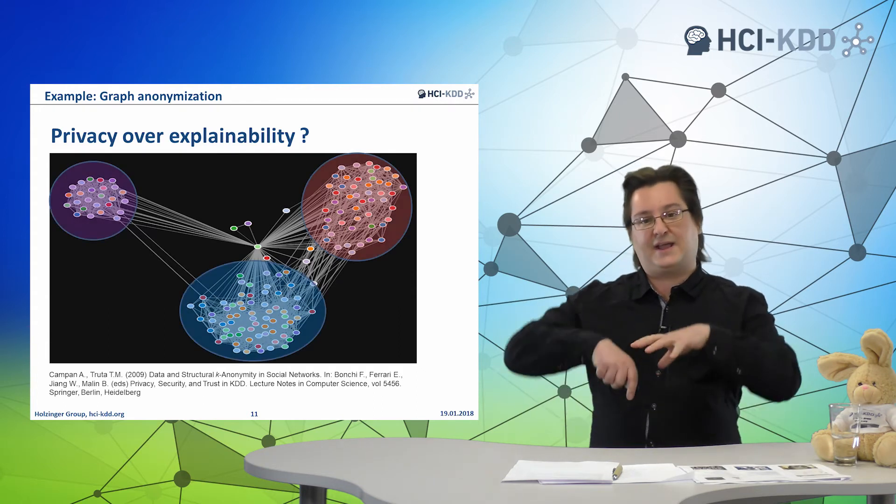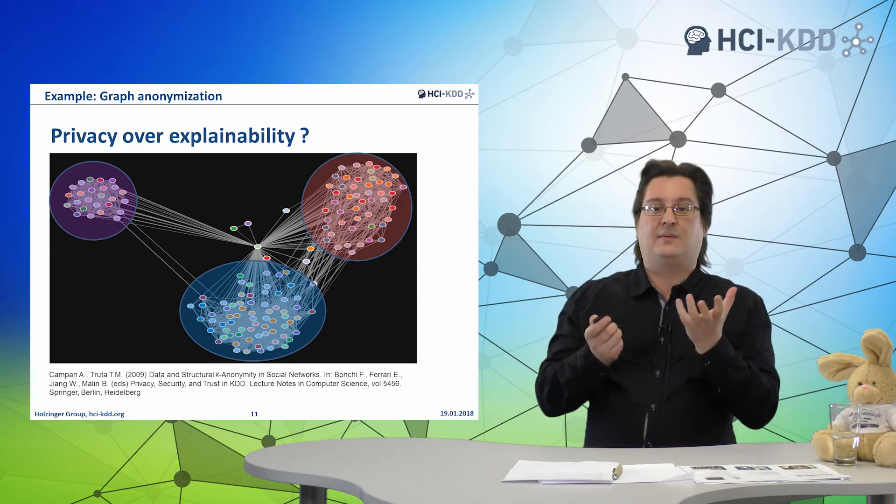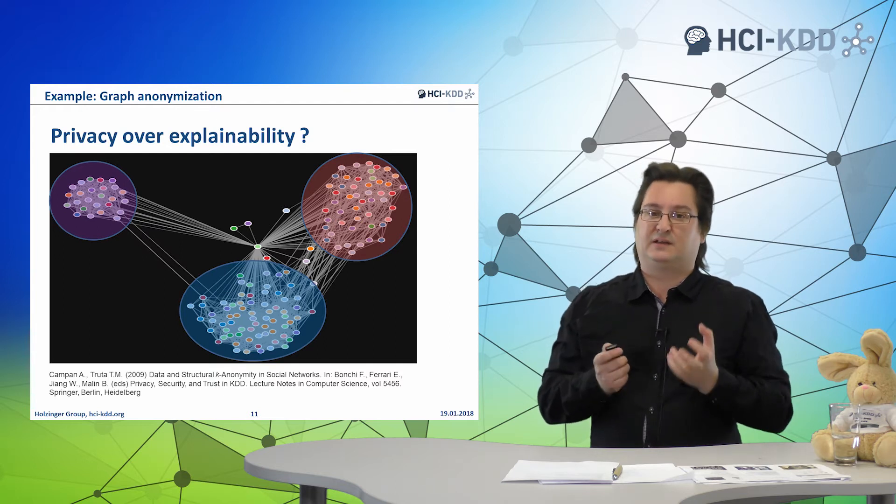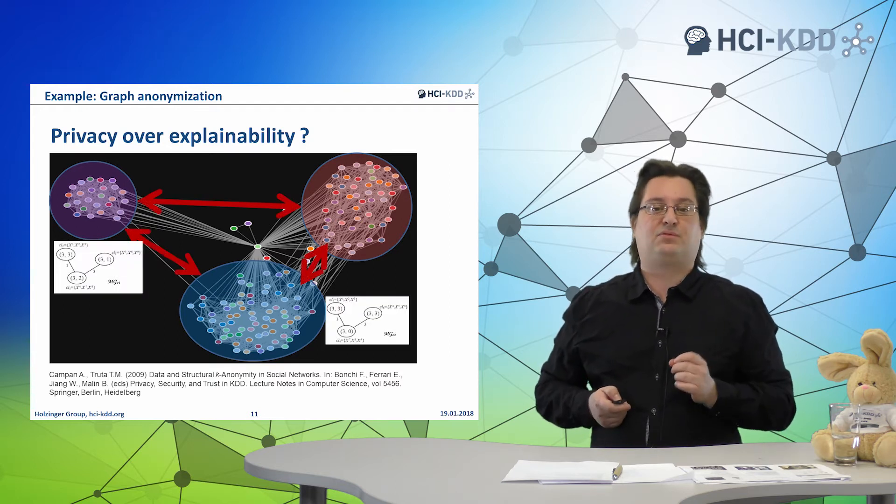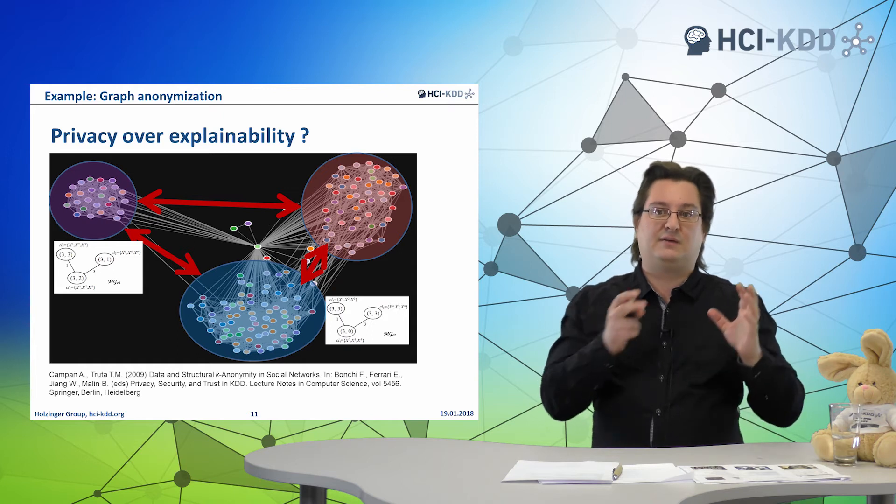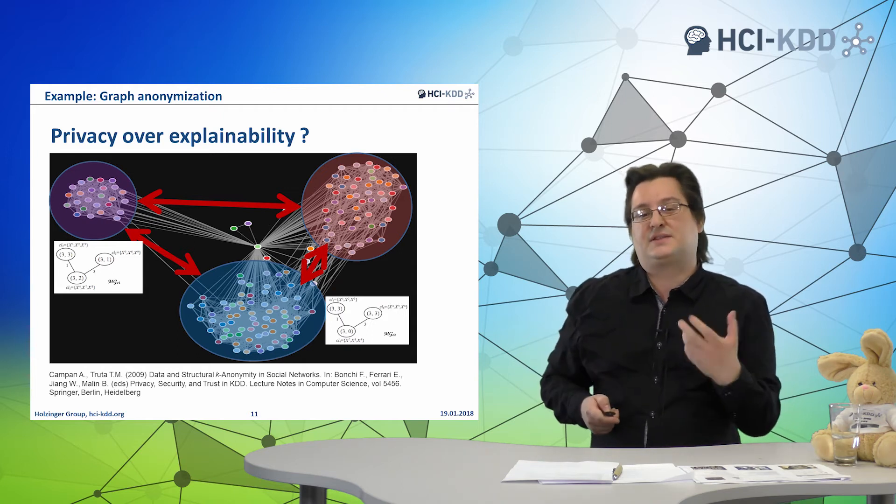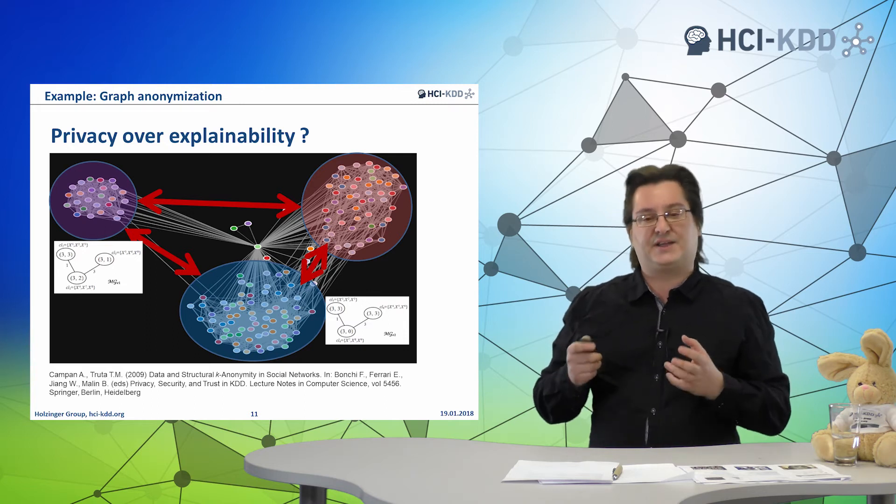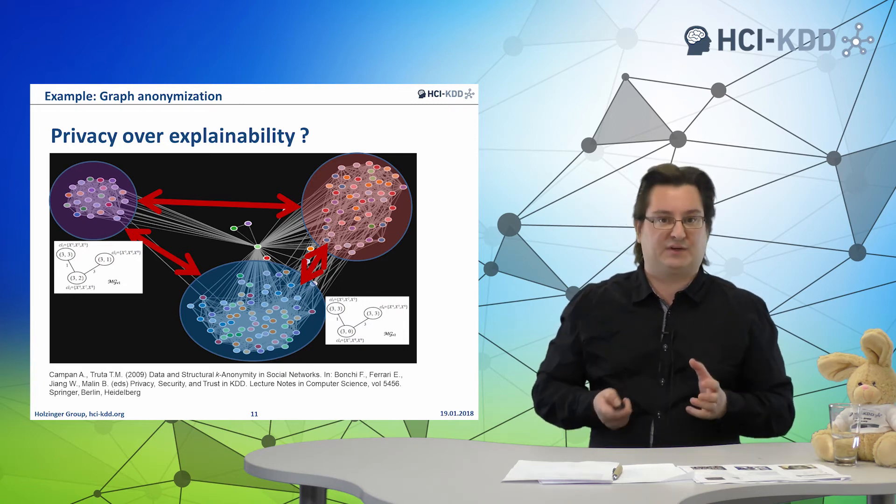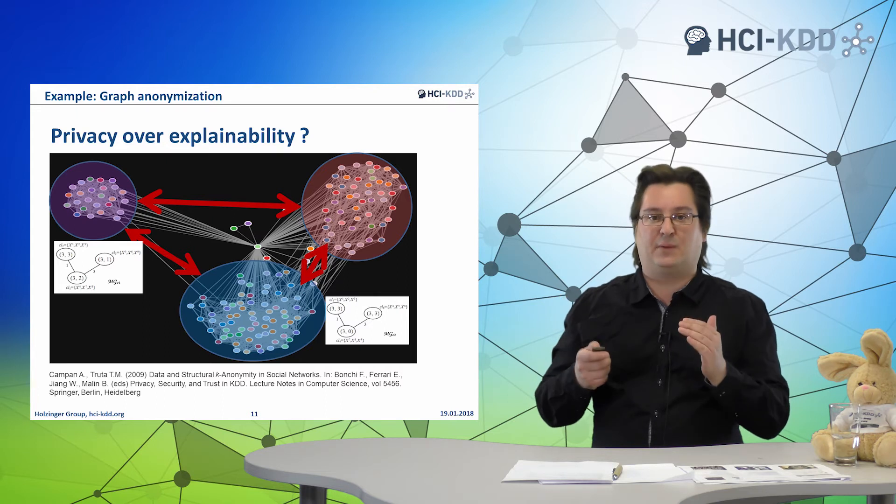So what we can do here is we can actually first compute information content locally, and then only propagate that information from one cluster to the other, and not the individual nodes. This gives us kind of a hybrid model, but it actually hides the exact origin of the information. So here we have a compromise.